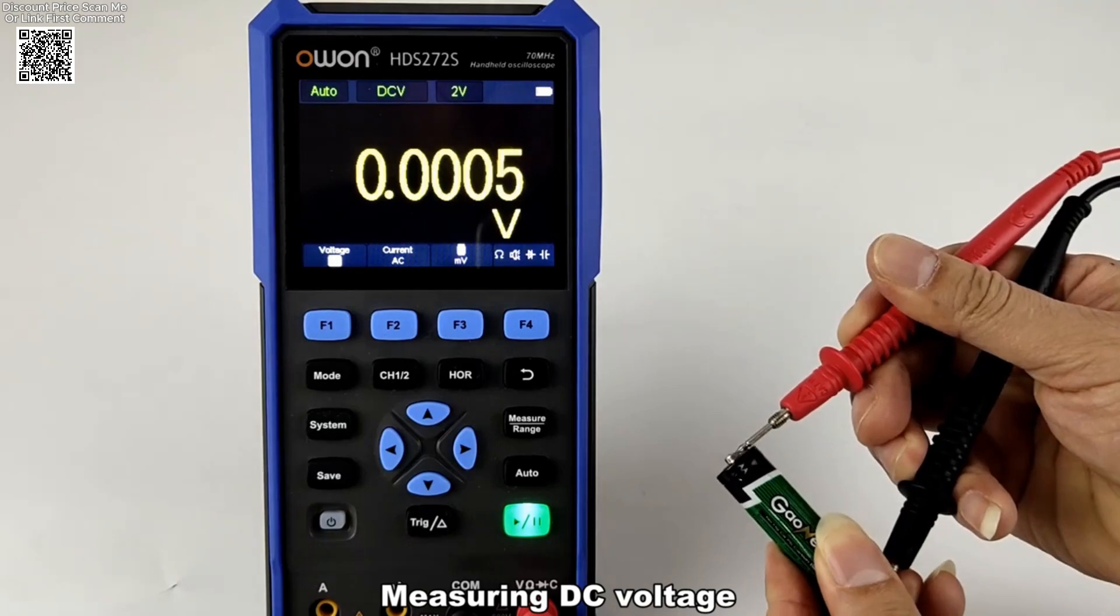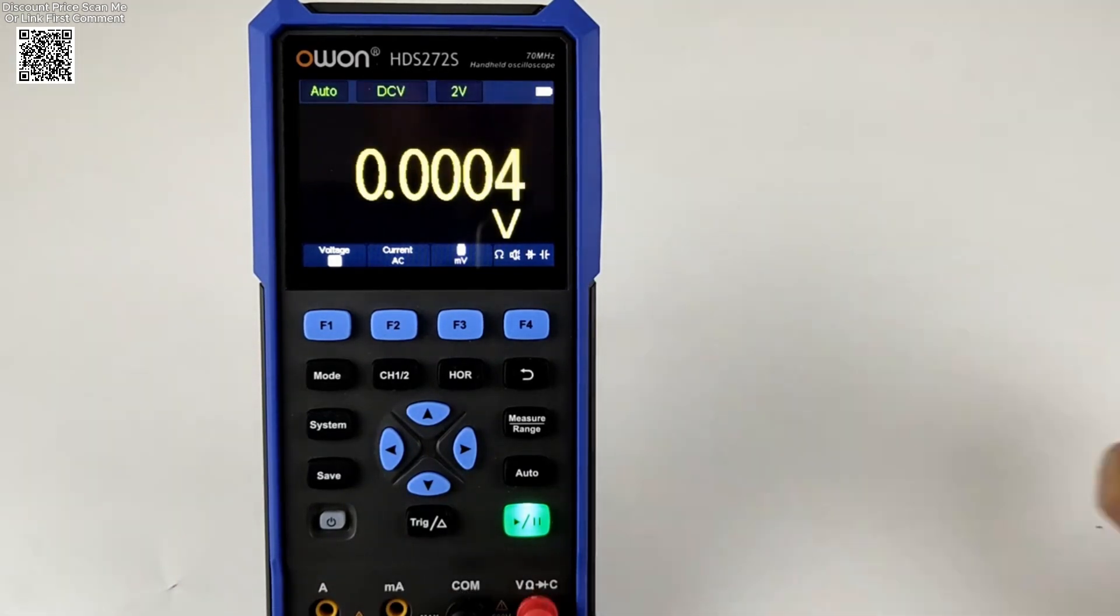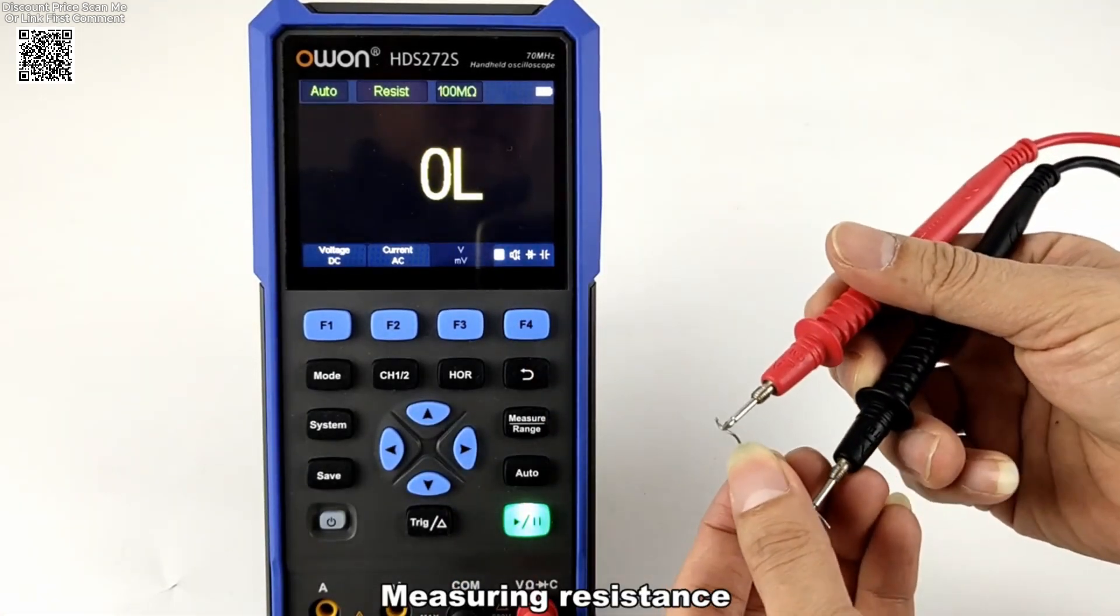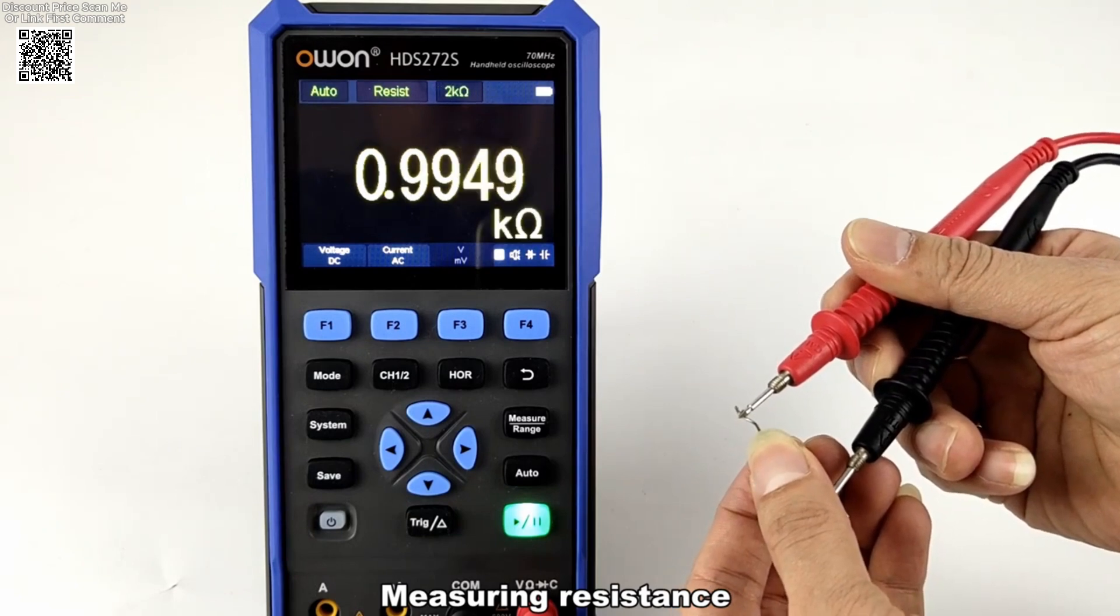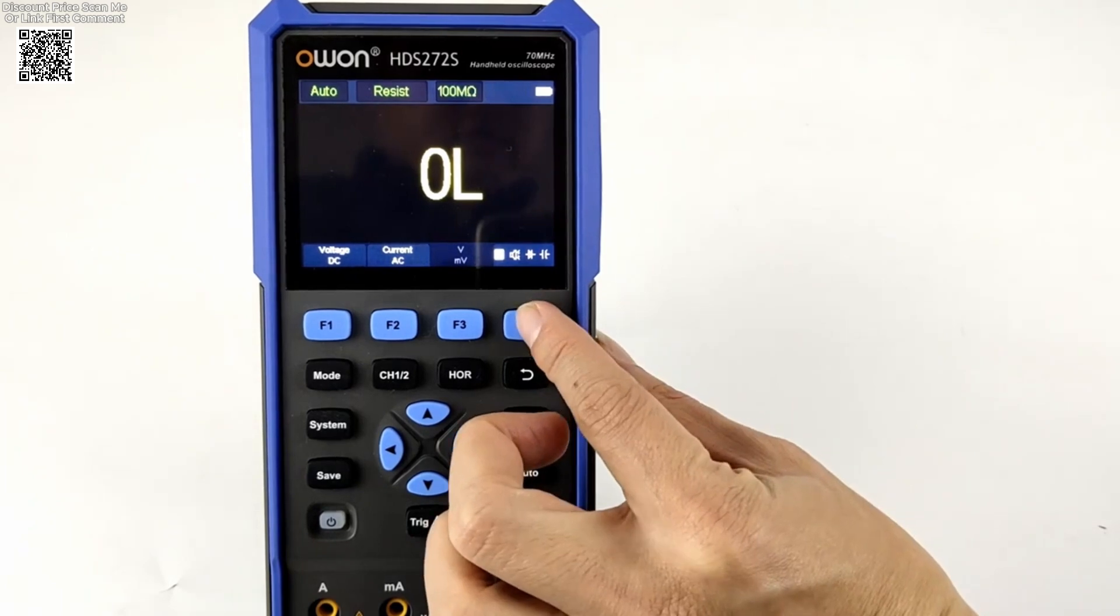Designed with mobility in mind, this oscilloscope features a 3.5-inch high-resolution, high-contrast color LCD display, making it easy to view waveforms even in bright environments. Its lightweight and portable form factor, combined with a durable 18650 lithium battery, allows for up to six hours of continuous operation, perfect for outdoor fieldwork or on-site diagnostics.